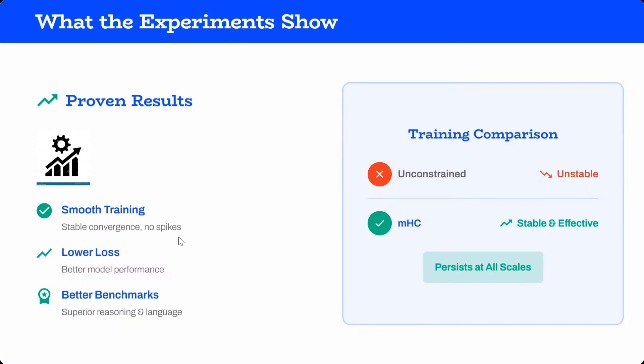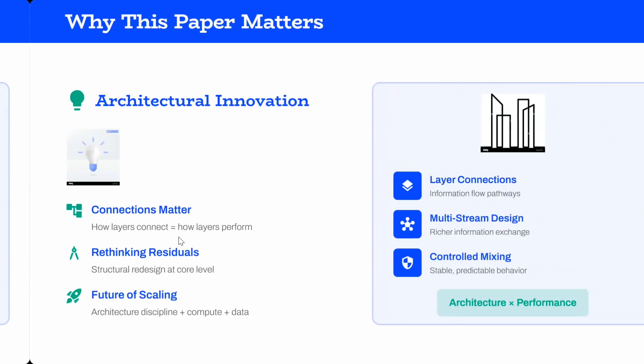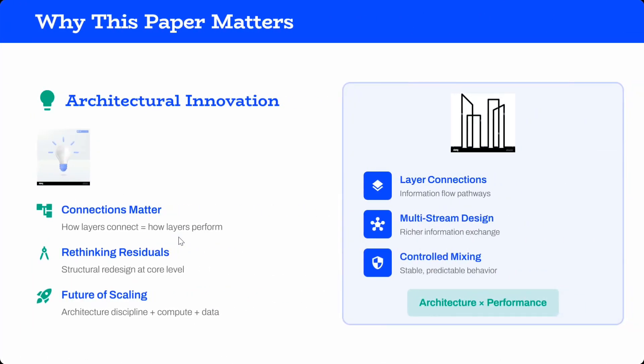What the experiment shows: proven results with smoother training, lower loss and better benchmarks. Training comparison: when doing unconstrained hyper connections it's unstable, while with MHC it's stable and effective. Why this paper matters: it's an architectural innovation for sure. Connections matter - how layers connect determines how layers perform. It's rethinking residuals, an improvement for residual connections used in LLMs, and the future for scaling.